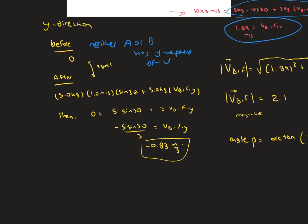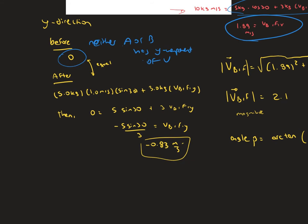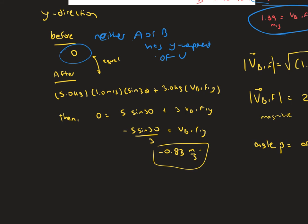So in the y-direction, before the collision, neither object A or B has a value for the velocity. That means that nothing's going on, so that's going to be zero. After the collision though, we can find the y-component. We can say that the mass times the velocity times sine of 30, which is the y-component.